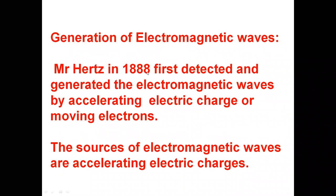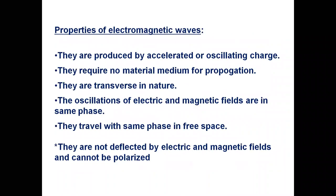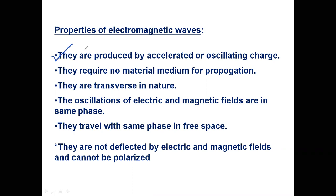Generation of electromagnetic waves: Mr. Hertz in 1888 was the first one who detected and generated electromagnetic waves, by accelerating electric charge. The source of electromagnetic waves is accelerating charges. Now, properties of electromagnetic waves: they are produced by accelerated or oscillating charges. They require no material medium to travel — this is very important. Electromagnetic waves do not require any material medium.